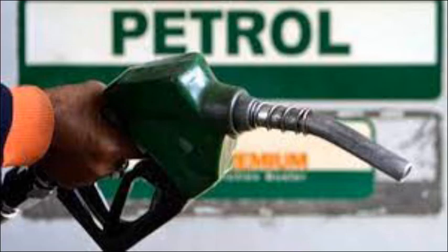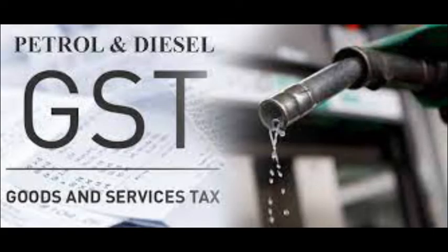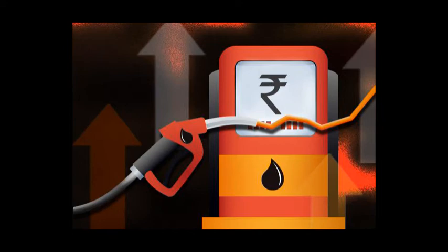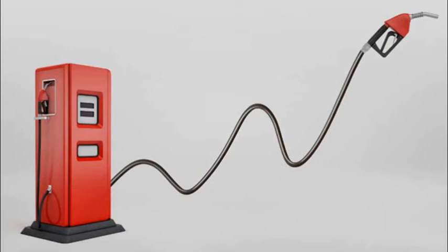The taxing system involves both state government tax and central government tax. Before 2017, GST was introduced. GST means Goods and Service Tax. Previously the state government used VAT and the federal government used excise duty, both applied as product tax. Now with GST, every product and service is covered. Some products have 5%, some 12%, some 18%, and some have 28% GST.